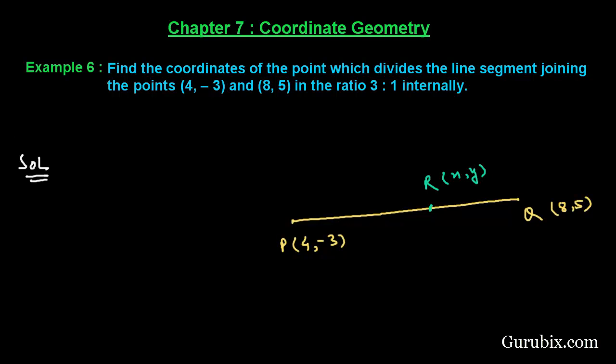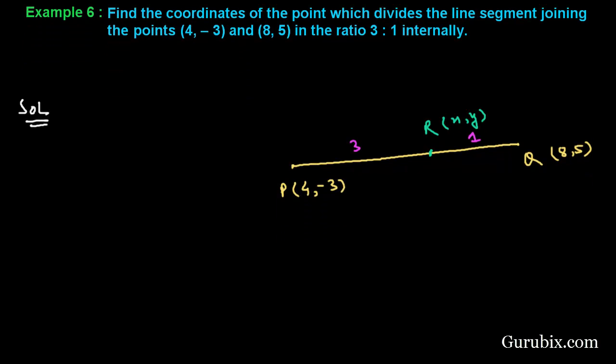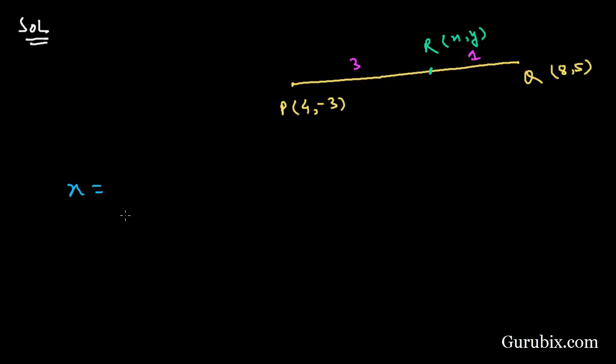And suppose this is the point R whose coordinates are (x, y), and the given ratio is 3:1. Here is 3 and here we have 1. And now we shall apply the section formula.